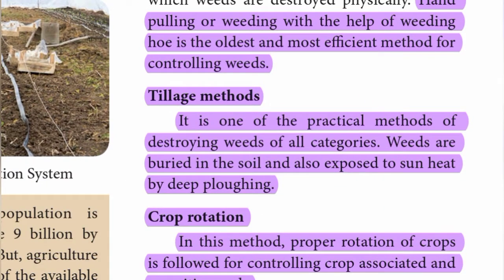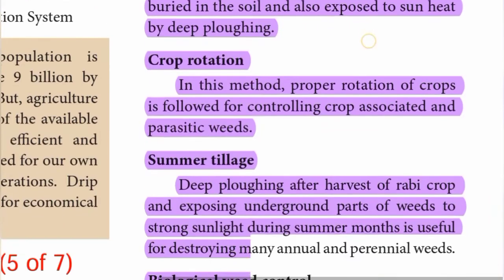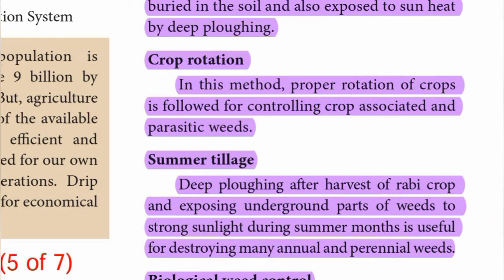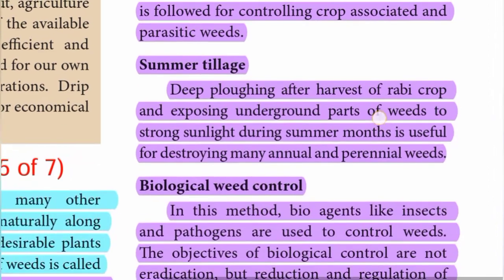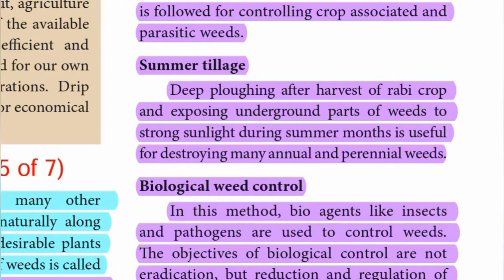Tillage methods: It is one of the practical methods of destroying weeds of all categories. Weeds are buried in the soil and also exposed to sun heat by deep ploughing. Crop rotation: In this method, proper rotation of crops is followed for controlling crop-associated and parasitic weeds. Summer tillage — deep ploughing after harvest of rabi crop and exposing underground parts of weeds to strong sunlight during summer months — is useful for destroying many annual and perennial weeds.